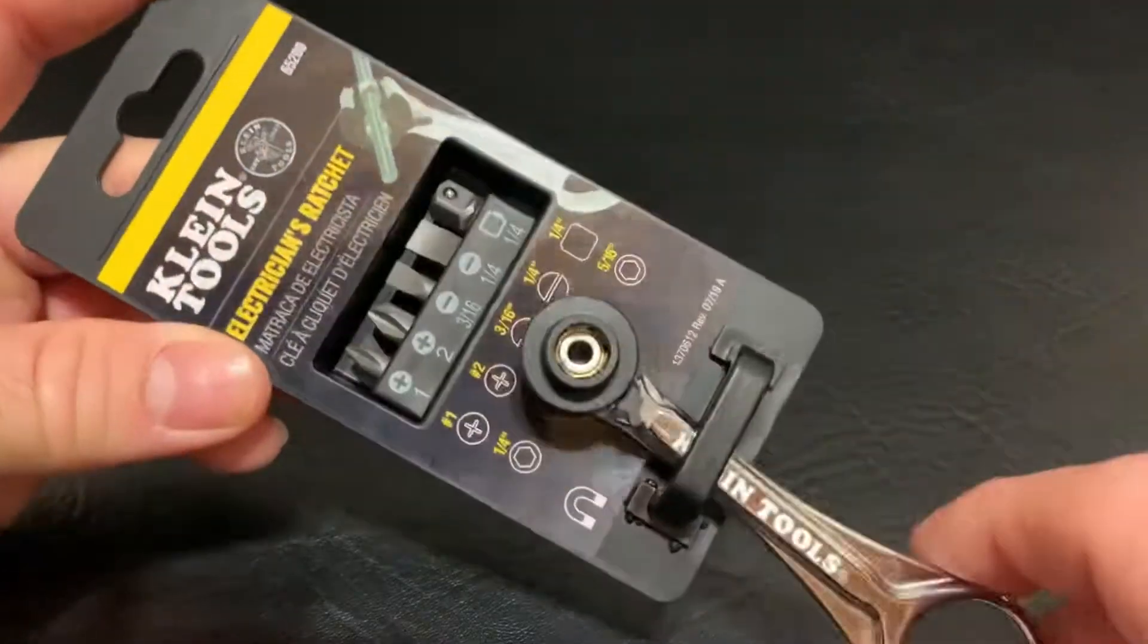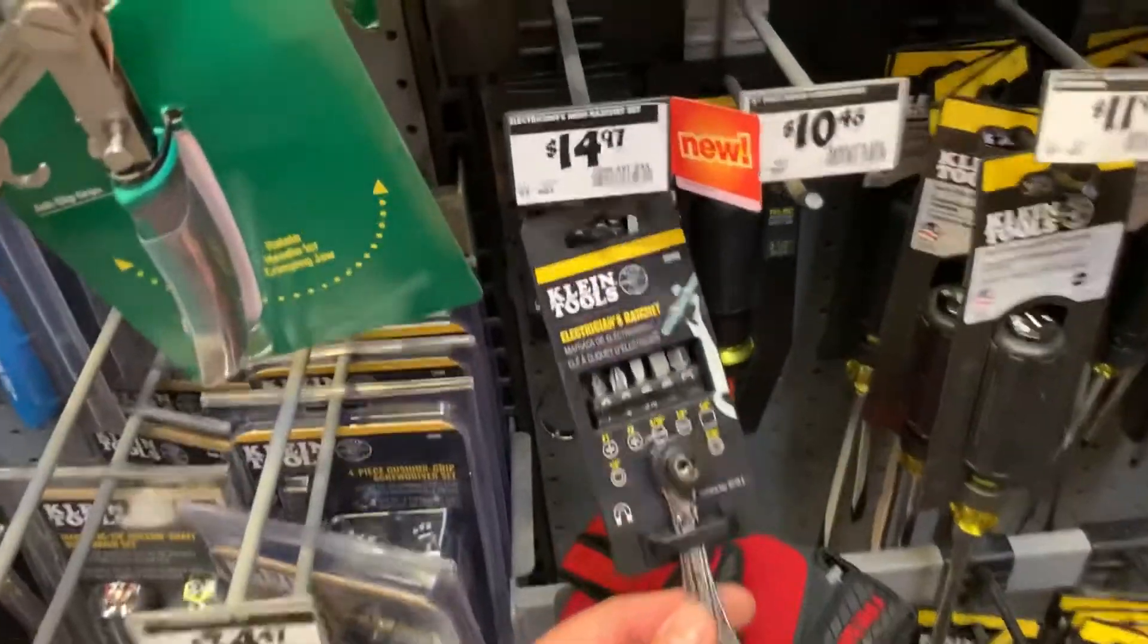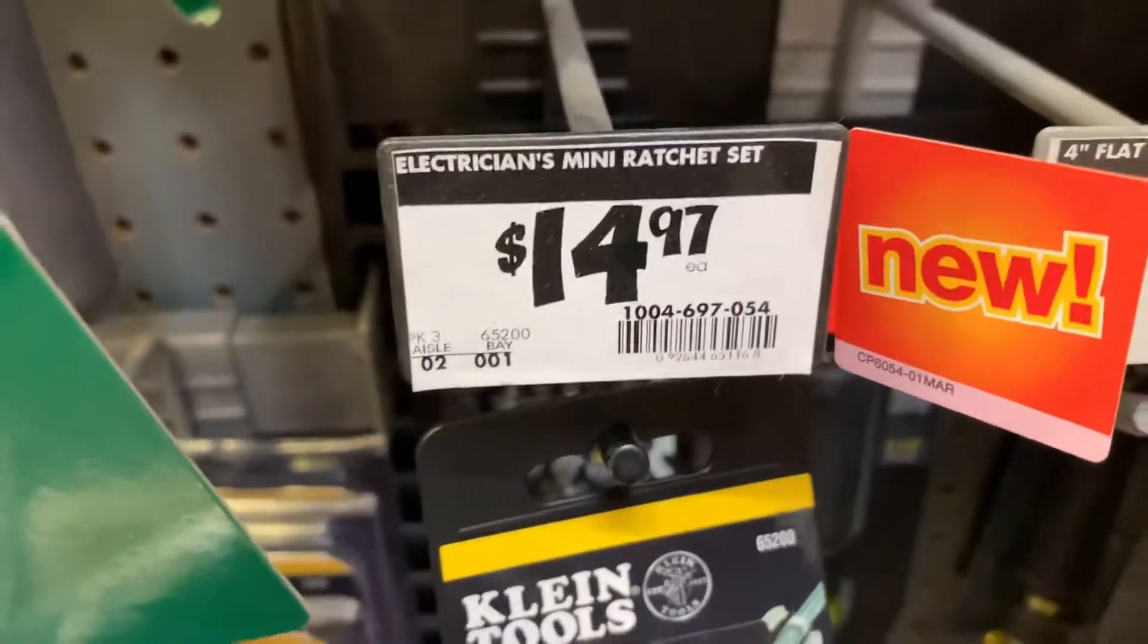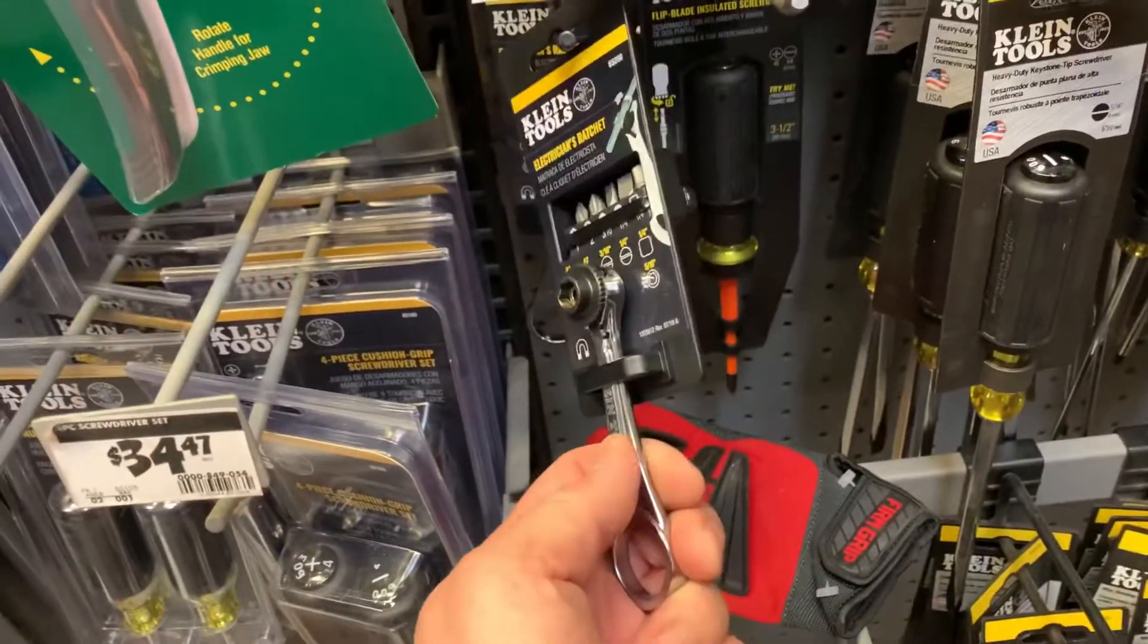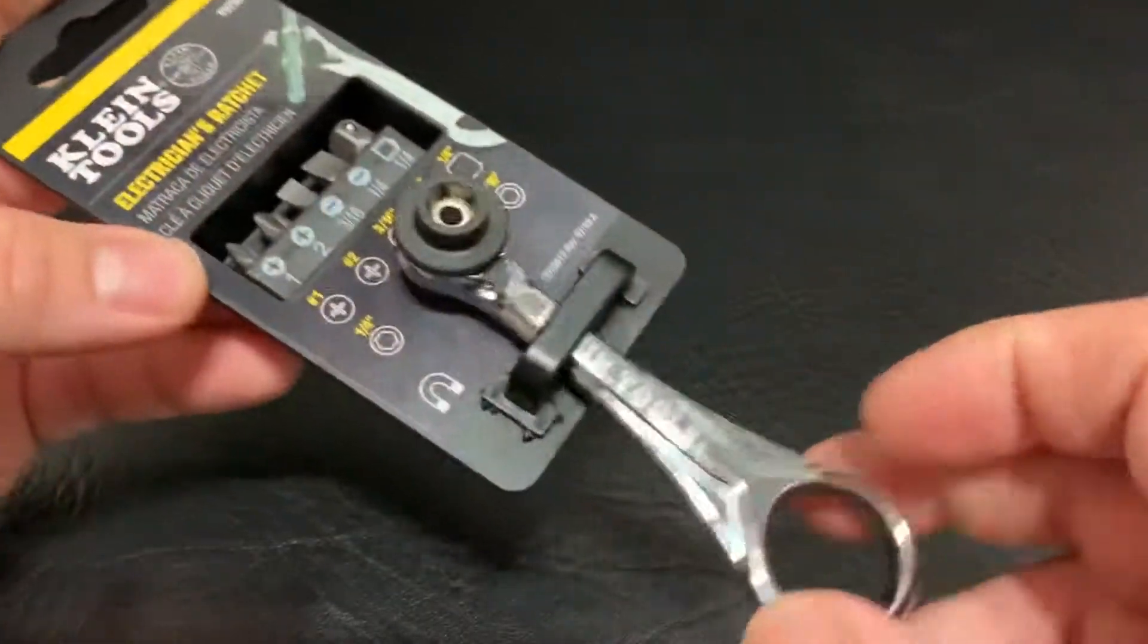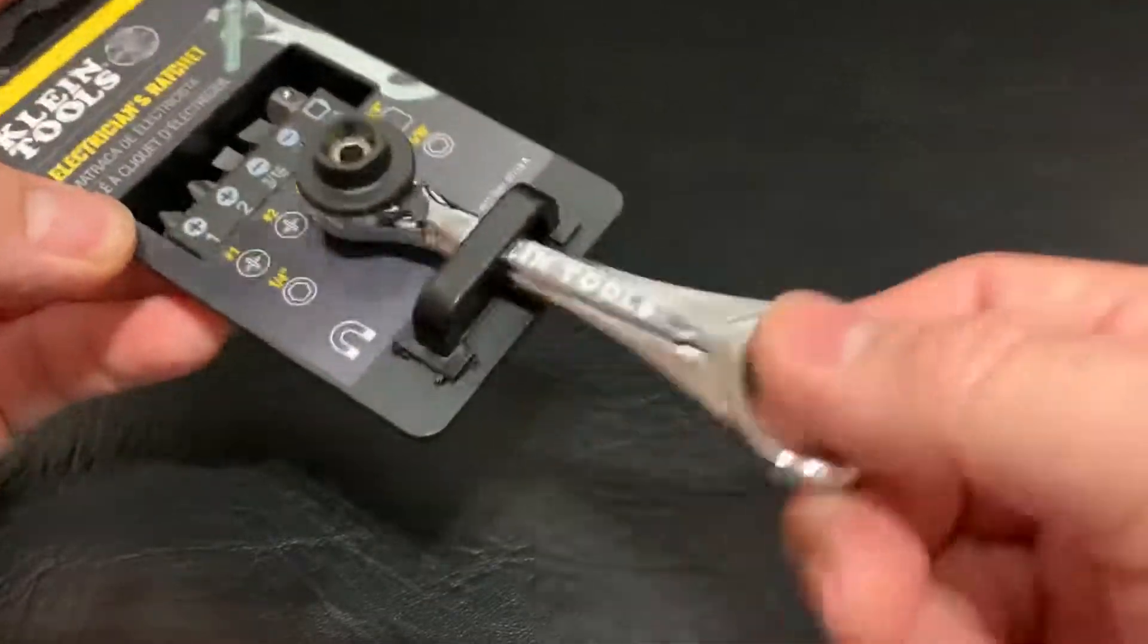What's up guys, picked this ratchet up from Home Depot. They actually had this in stock, it's pretty new. It's 65 200, it's an electrician's ratchet and I thought it was pretty cool. It has this little thumb drive right here on the handle and it's reversible and everything.